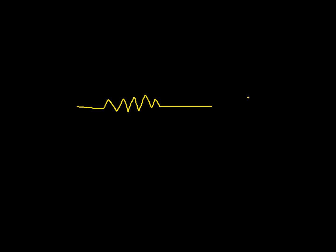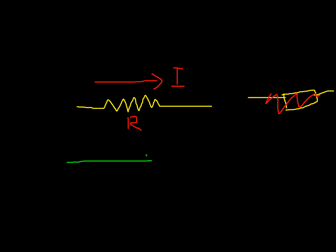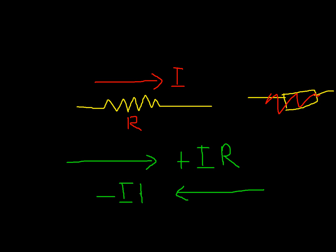Next we will take the resistor. Let this be the resistor, and let's say this is the direction of current flow — current is I and resistance is R. If you are travelling in the direction of current, add plus IR to the equation. If you are travelling against the flow of current, subtract IR from the equation. We already saw this in the previous part of the video.